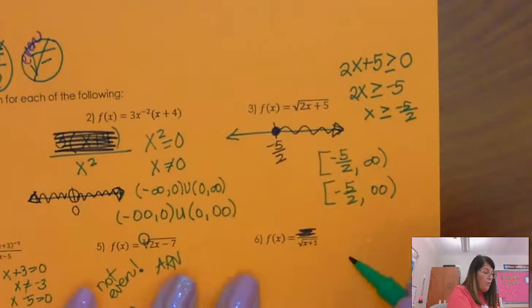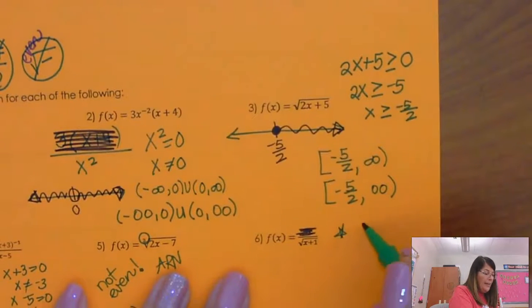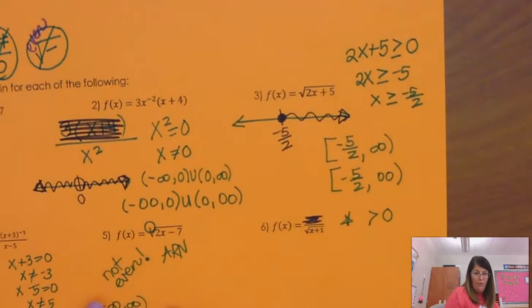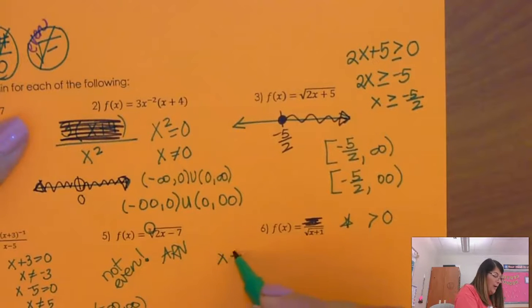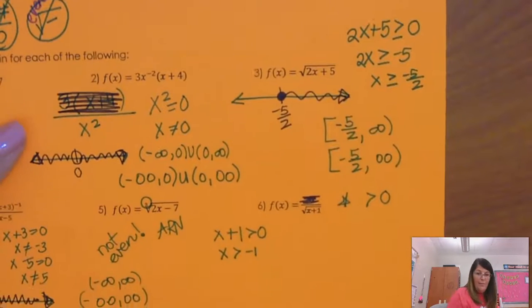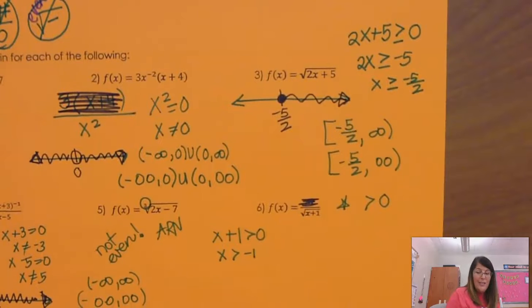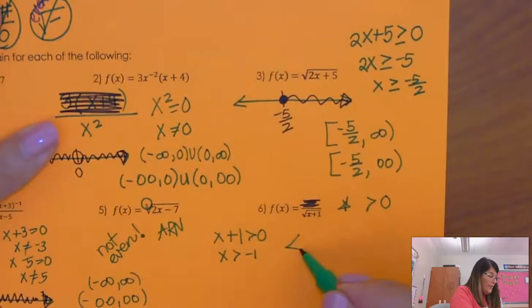So all I'm going to do here is make it greater than 0, the denominator. So x plus 1 is greater than 0. So x is greater than negative 1. That's it. As long as x is bigger than negative 1, this is okay.